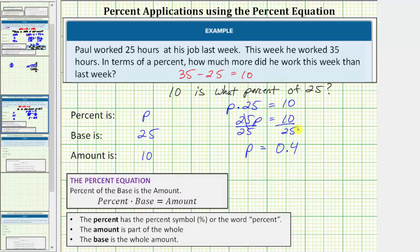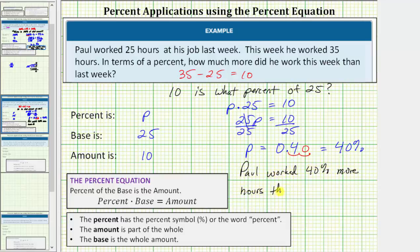But we want a percent, and therefore we'll convert the decimal to a percent and move the decimal to the right two places, so 1, 2, add a zero, which gives us 40%. 0.4 is equal to 40%, which means Paul worked 40% more hours this week than last week. I hope you found this helpful.